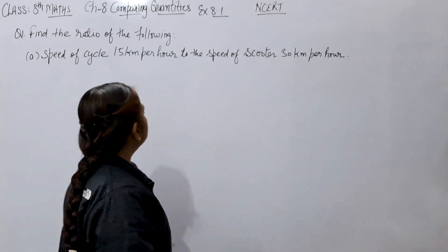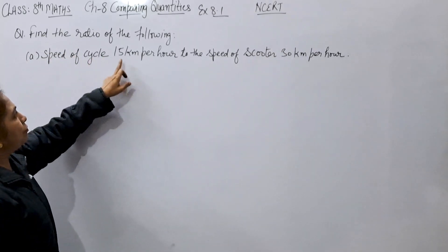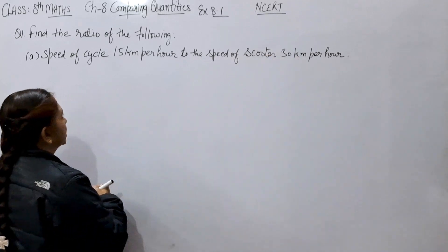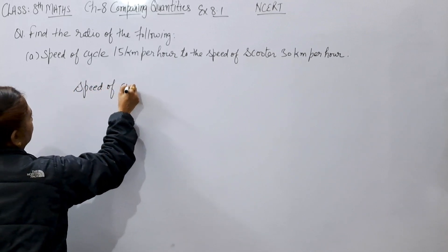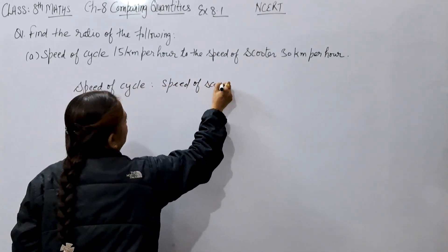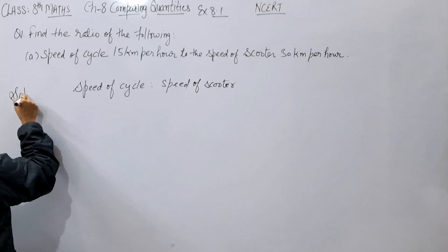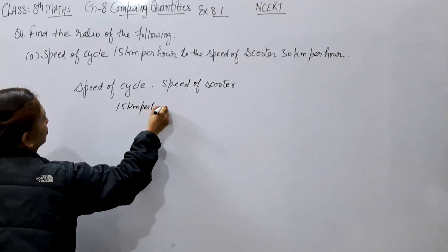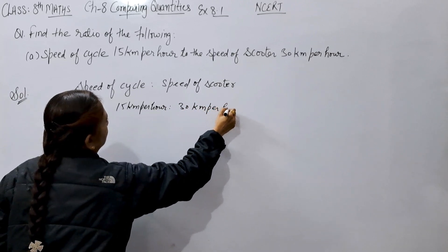Question number 1: Find the ratio of the following. First part — speed of cycling 15 km per hour to the speed of scooter 30 km per hour. The ratio of speed of cycle to speed of scooter. Solution: 15 km/h ratio 30 km/h.